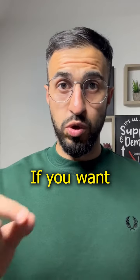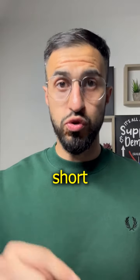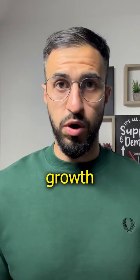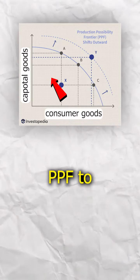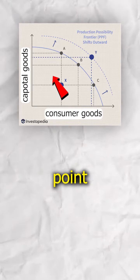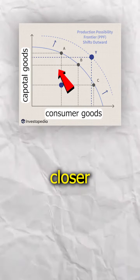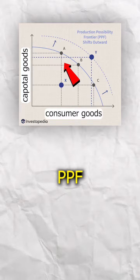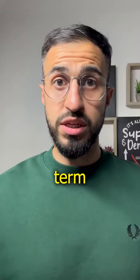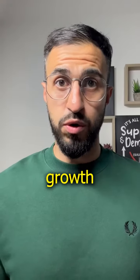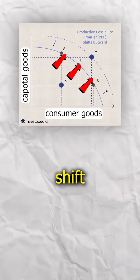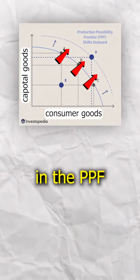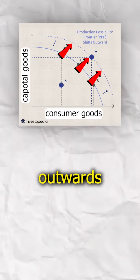If you want to show short-run economic growth on a PPF, this would be a movement from within the PPF to a point closer to the PPF. Long-term economic growth would be shown by a shift in the PPF outwards.